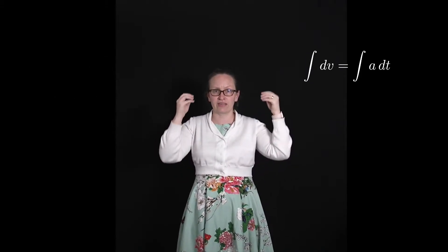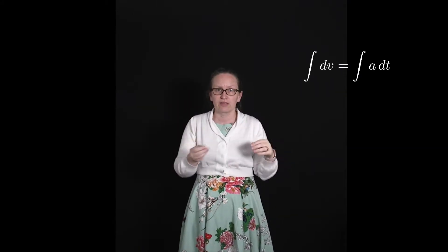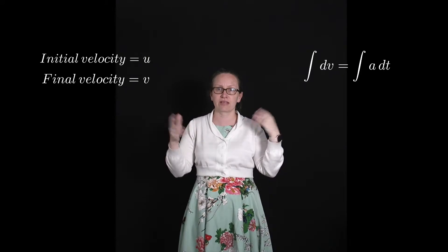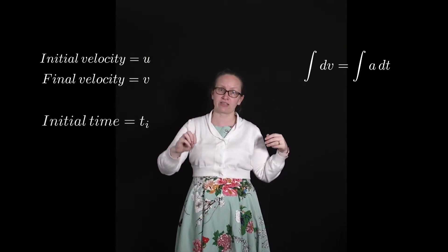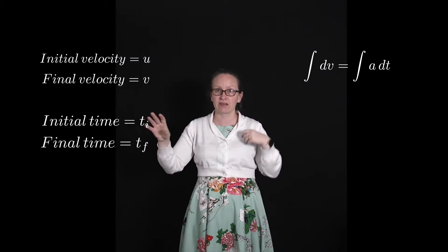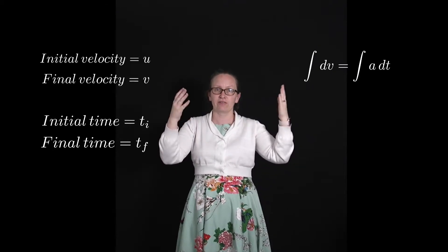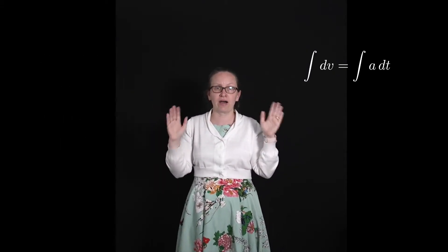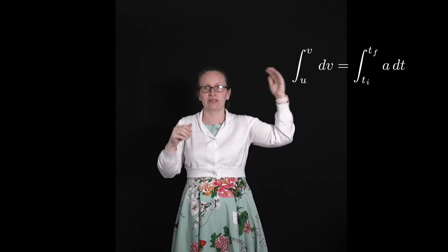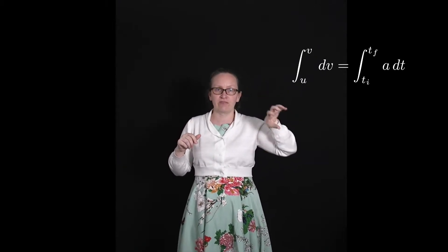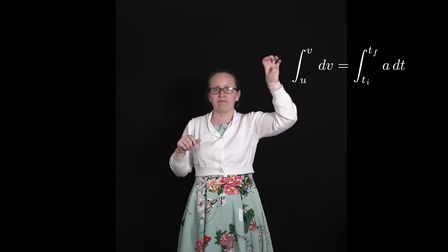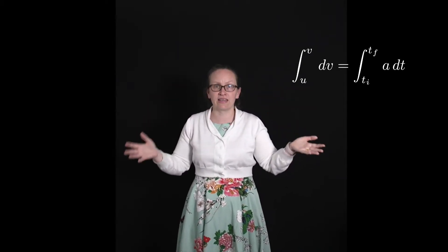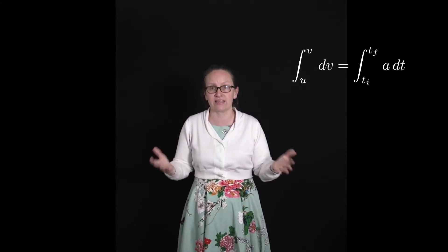The limits on our dv integral are related to the velocity. Usually we give the initial velocity the symbol u and the final velocity the symbol v. So if we're integrating from some initial time t_i to some final time t_f, then physically at time t_i the velocity equals u, and at time t_f the velocity equals v. We can now place these limits onto our integral equation: the integral of dv from u to v equals the integral from t_i to t_f of a dt. This is an integral equation we can solve if we know what the acceleration is.